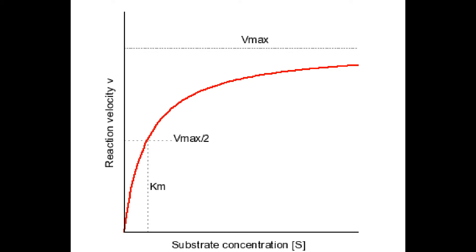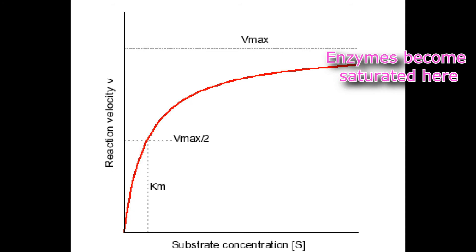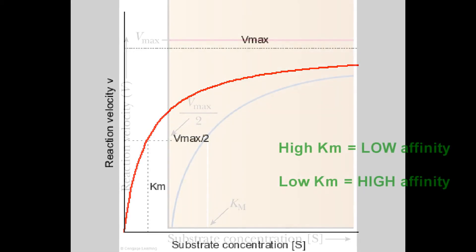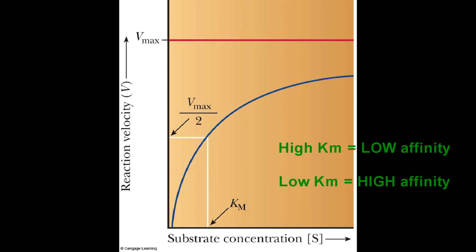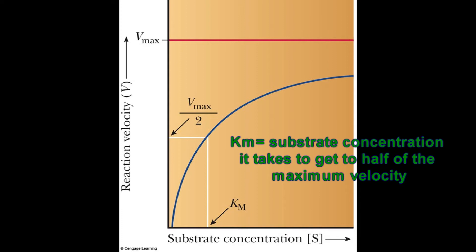Ultimately, from doing this plot, we can estimate the Michaelis constant, the Km. An enzyme that has a higher affinity for a substrate is going to have a low Km value — it takes a little bit of substrate to get half the Vmax. An enzyme that doesn't have affinity for a substrate requires flooding with substrate before it acts — that gives a high Km. Since we can't reach Vmax, we're going to use Vmax divided by 2 to compare enzymes, and that gives us the Km. Km is the substrate concentration it takes to get to Vmax divided by 2. High Km means low affinity; low Km means high affinity for the substrate.